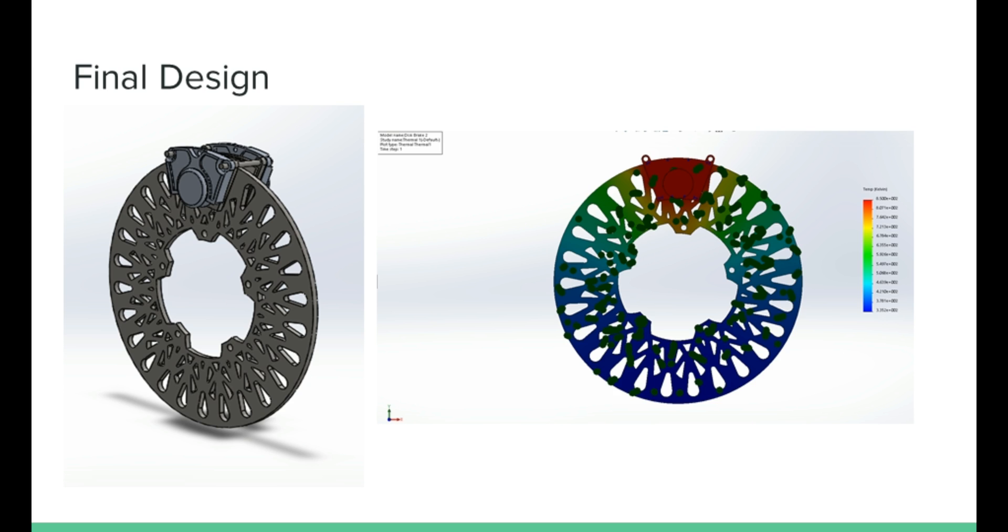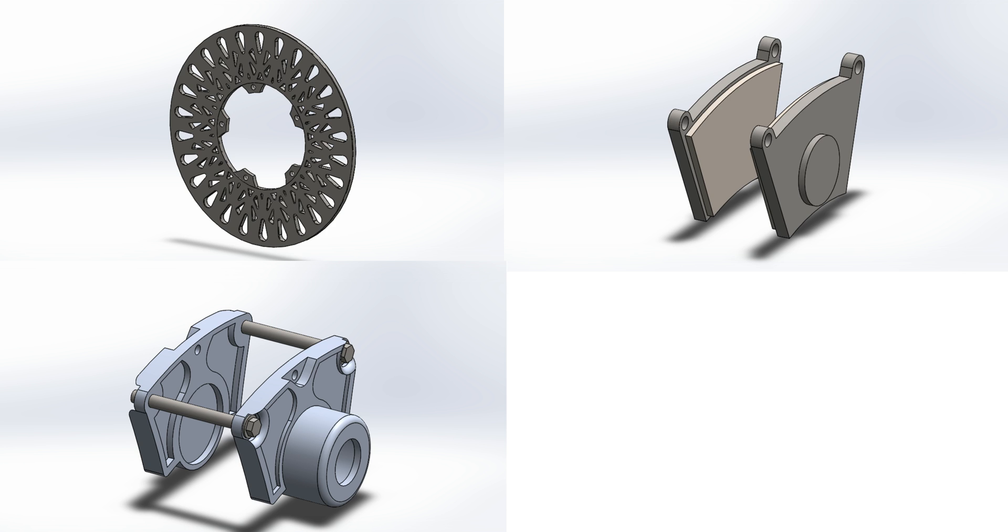This picture here represents the final design of the disc brake, and on the right is a snapshot of a thermal analysis. The final design consists of a rotor that is based on a tangerine pod design, a caliper, a brake pad, and a piston.